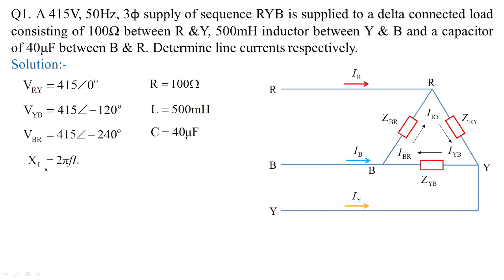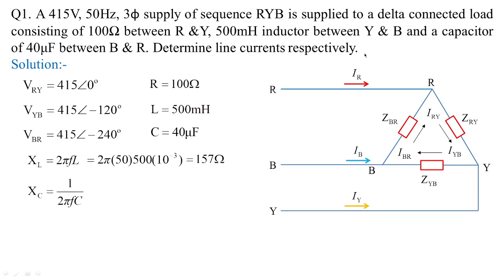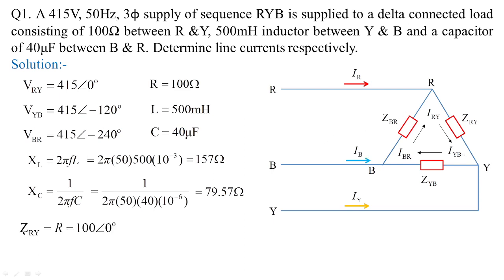The inductive reactance is calculated as X_L = 2πfL, giving a value of 157 ohms for the inductor placed between Y and B. Similarly, the capacitive reactance connected between B and R is equivalent to 79.57 ohms.